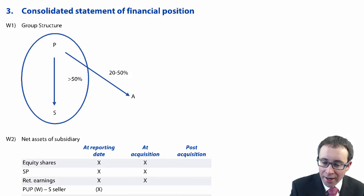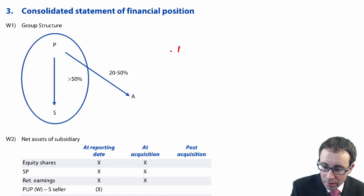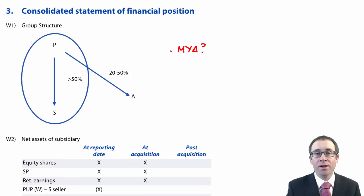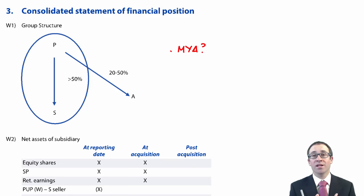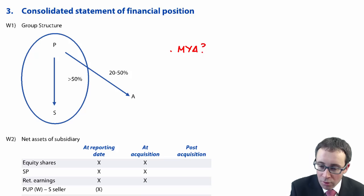The one thing I would add to your notes is to always check whether or not it is a mid-year acquisition. You want to have a look at whether the subsidiary was acquired mid-year, because if that's the case, you might need to work out the retained earnings at acquisition.